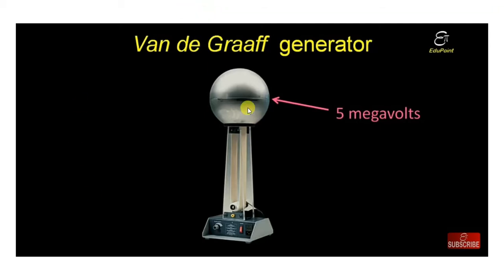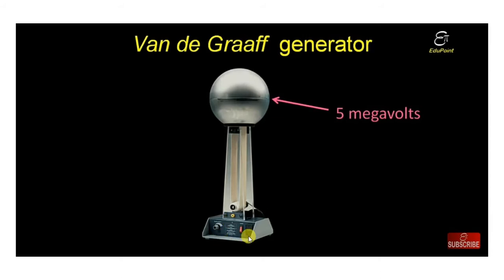The concept here involves a concentric sphere — it has another sphere inside with the same center. This is known as the conveyor belt. There is a metallic brush connected with the high voltage, and a high voltage potential difference is applied.